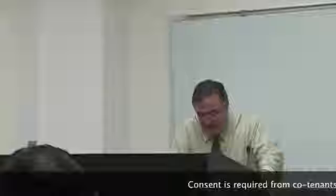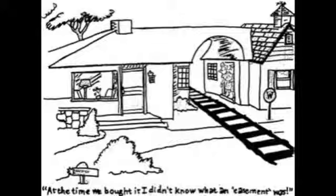One co-tenant cannot grant an easement in the property against the other without their consent. What happens if I give an easement right of way to the property and I'm a half joint tenant? I'm giving somebody the permanent right to use that property. Now that may defeat the rights of my co-tenant because now we have a road in the middle of the property — my co-tenant can never block that road. So I cannot grant an easement without asking permission from my co-tenant.